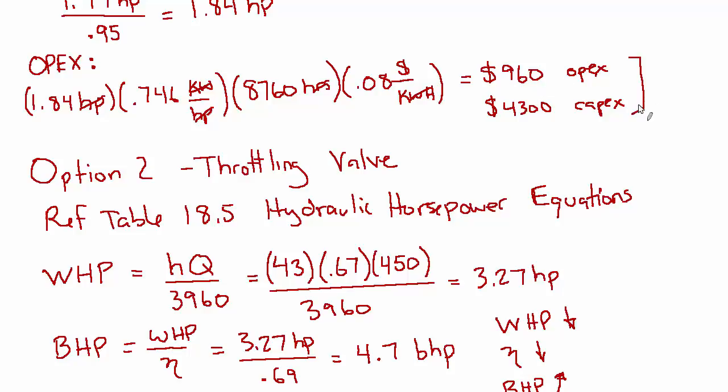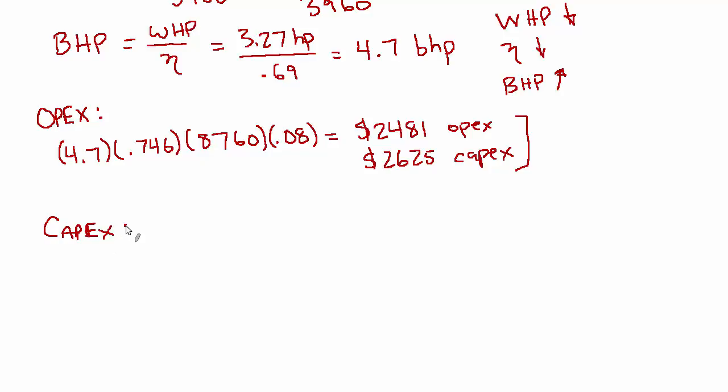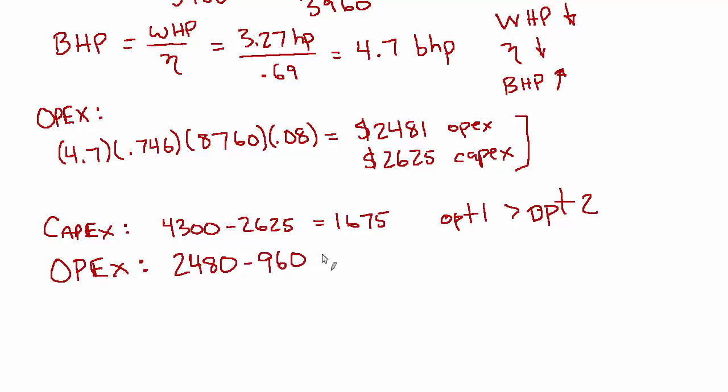So these were the results of our option one analysis. And these were the results of our option two analysis. And now let's find the difference between the two. Starting with the upfront cost, we have 4300 for option one minus 2625. So 1675, that's how much more option one costs than option two. But then on the OPEX side, we have a cost of 2480 every year with the throttling valve, but only 960 if we do the VFD.